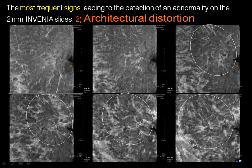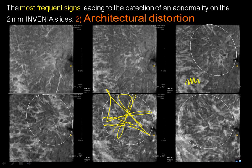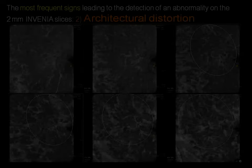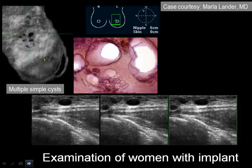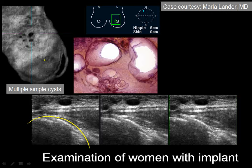Radiologists have a big problem with cancers that show up with architectural distortion — we miss them most of the time, and these are fatal cancers we shouldn't miss. Using the automated breast ultrasound, we find them earlier than mammography would. Women with breast implants also benefit a lot from automated breast ultrasound.